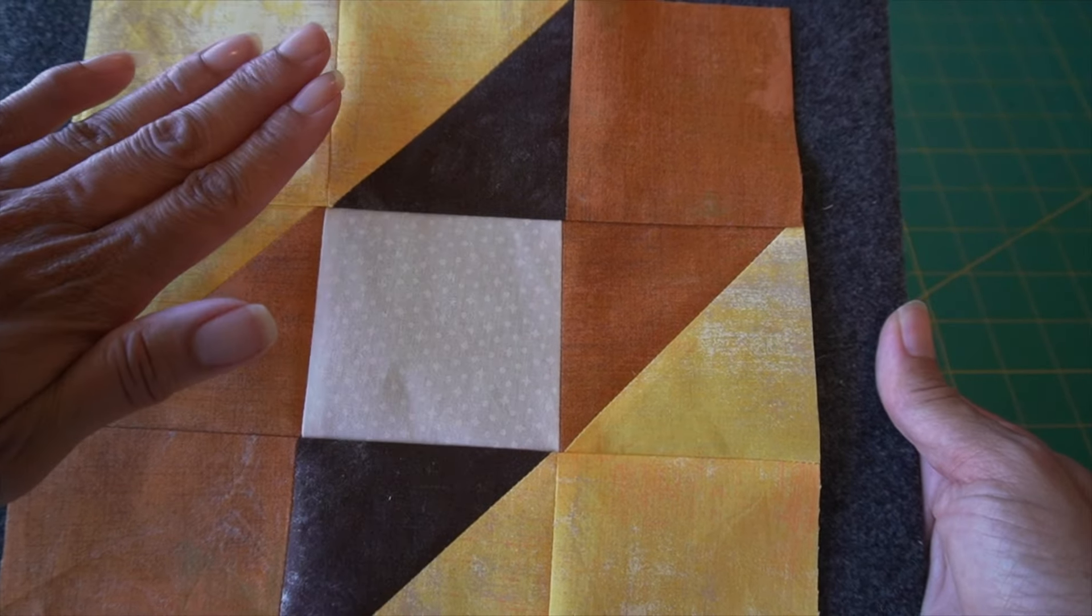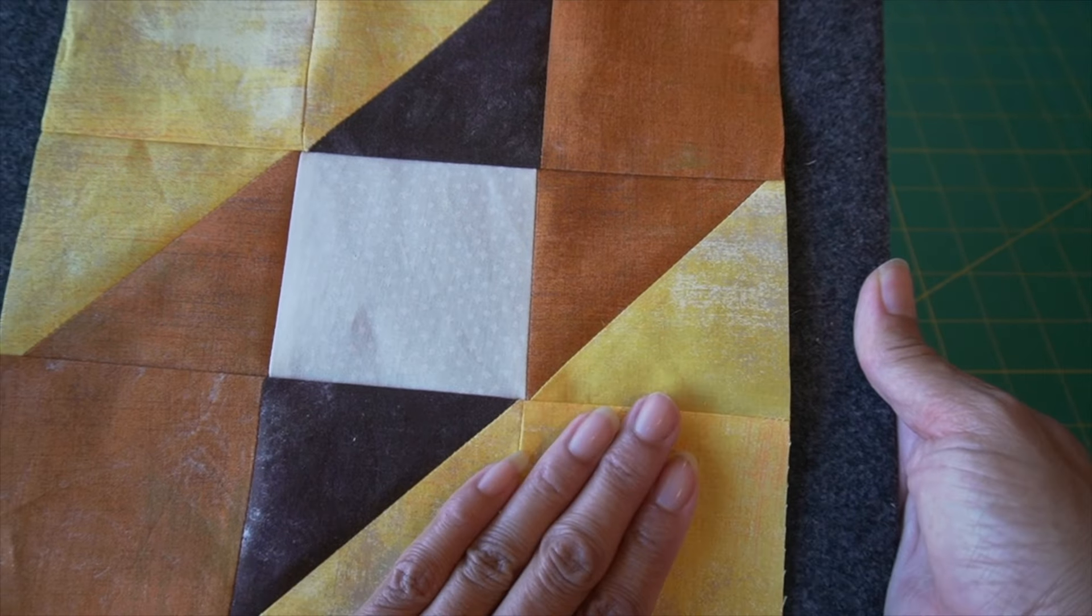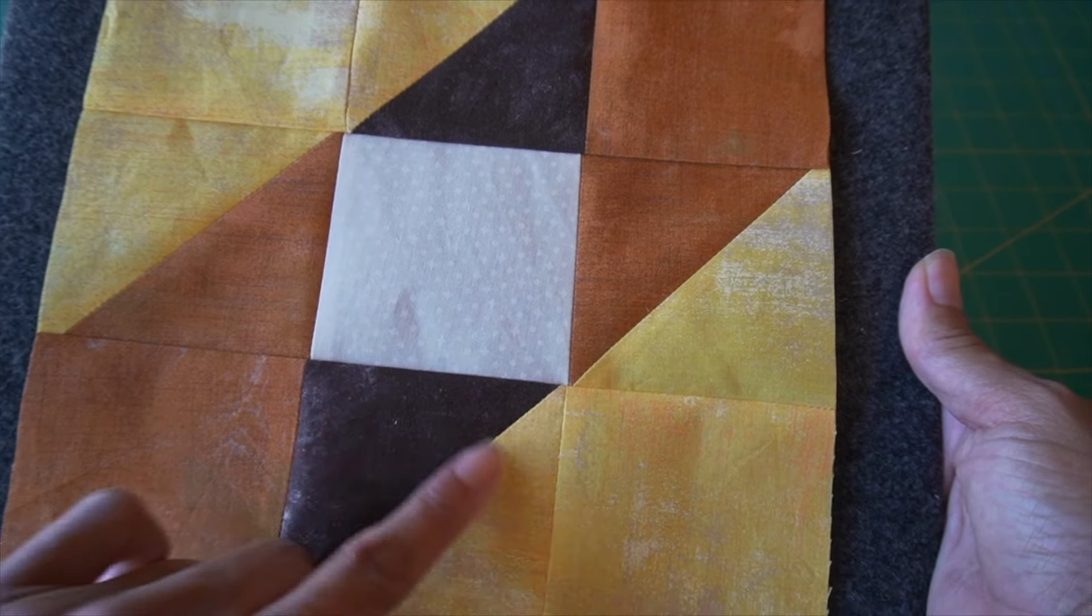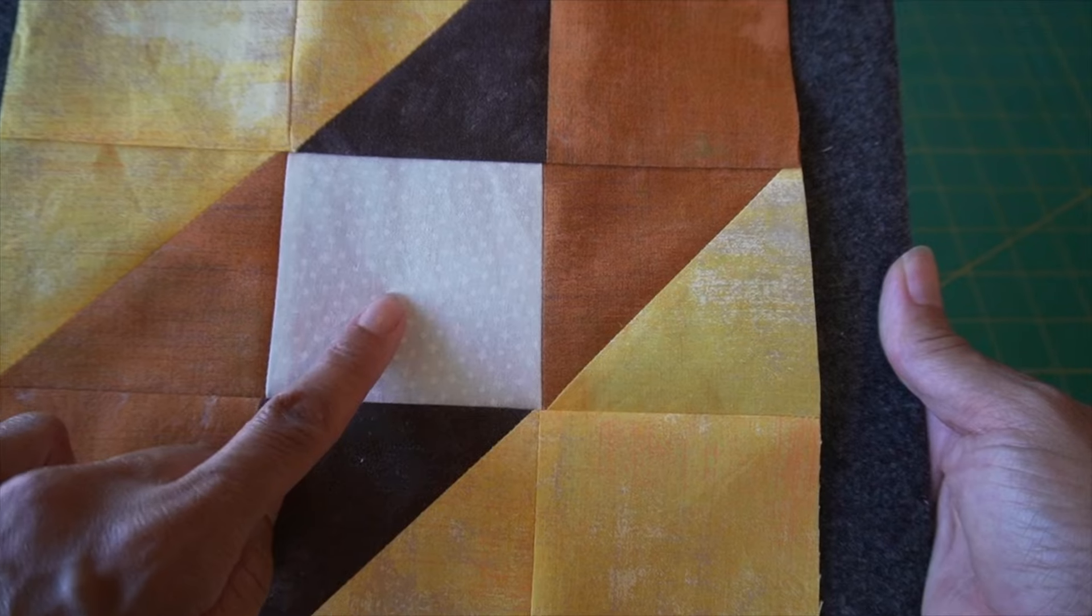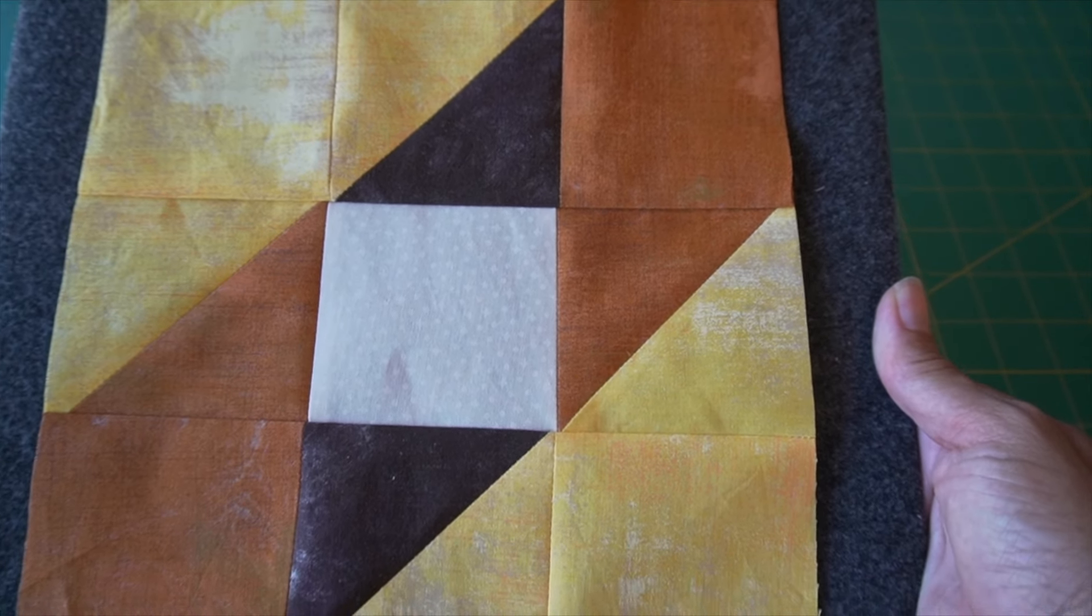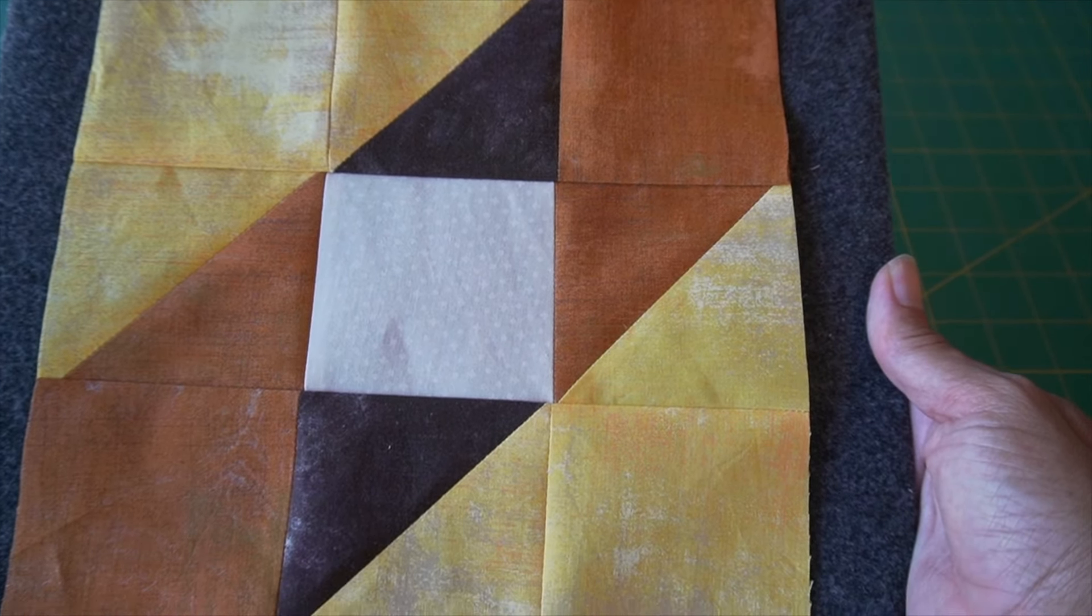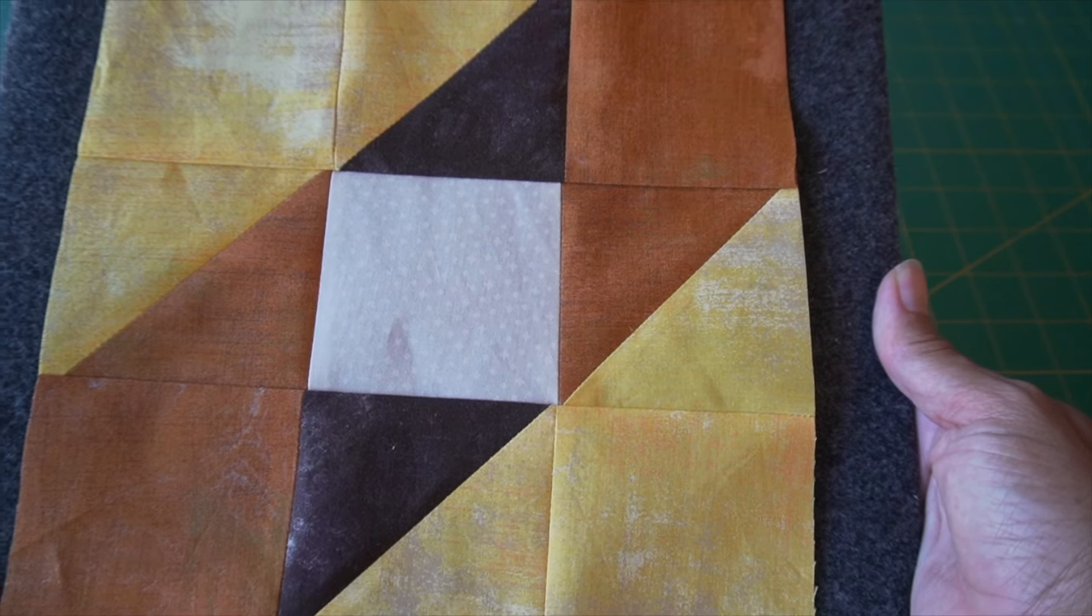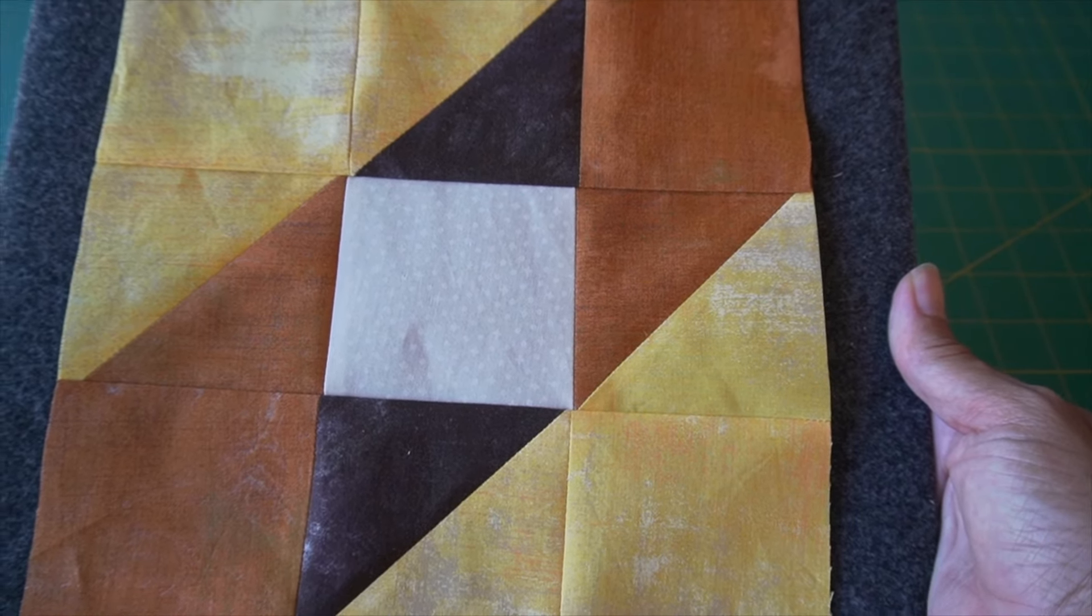You can see here, here's that larger half-square triangle. Here are those burnt orange pieces, the brown, and last but not least, that white center square. Let me know what you think in the comments. Until the next video, stay well and keep on quilting. I'll see you then.